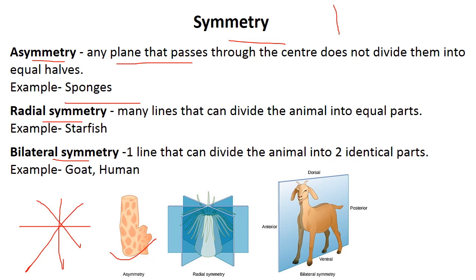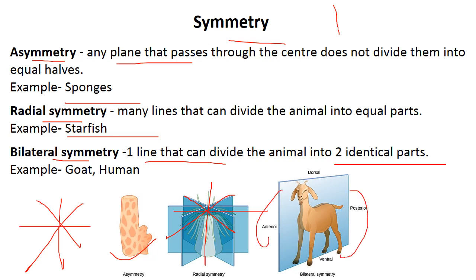Radial symmetry means many lines can divide the animal into equal parts. If you cut this organism from many lines, it has equal parts. Example is a starfish. Then bilateral symmetry — 'bi' means two, so bilateral symmetry means one line that can divide the animal into two identical parts. They are called bilaterally symmetrical. Example: humans.